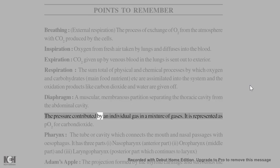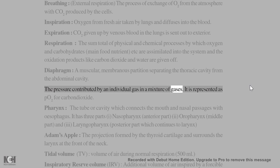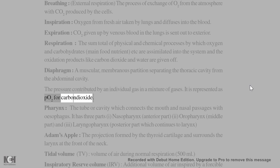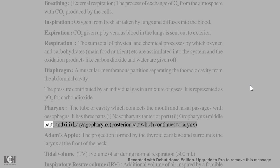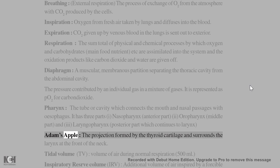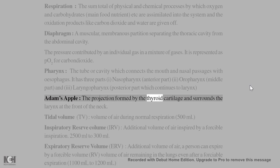Partial pressure is the pressure contributed by an individual gas in a mixture of gases, represented as PO2 for oxygen. Pharynx: the tube or cavity which connects the mouth and nasal passages with the esophagus. It has three parts: I. Nasopharynx (anterior part), II. Oropharynx (middle part), and III. Laryngopharynx (posterior part, which continues to the larynx). Adam's apple: the projection formed by the thyroid cartilage surrounding the larynx at the front of the neck.